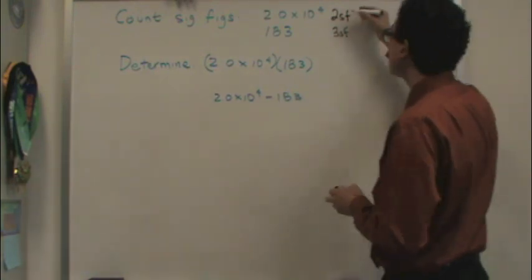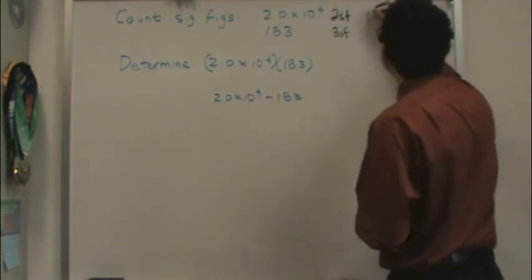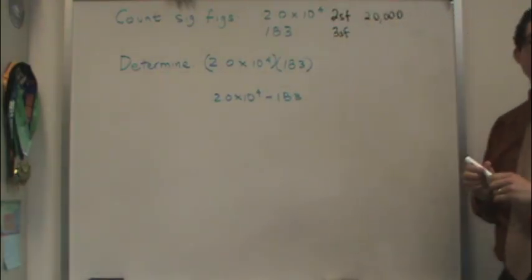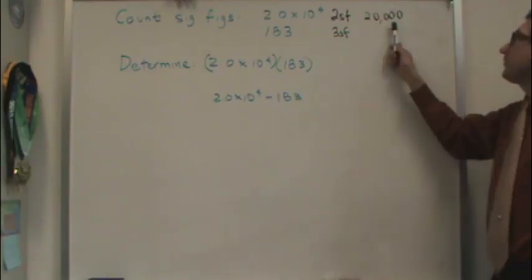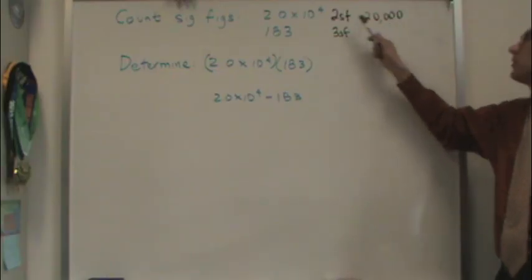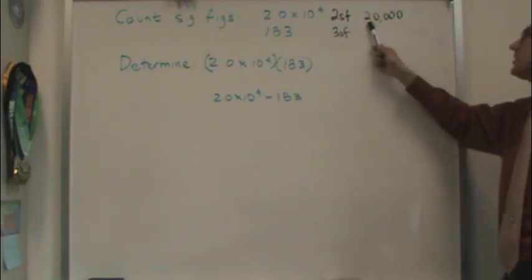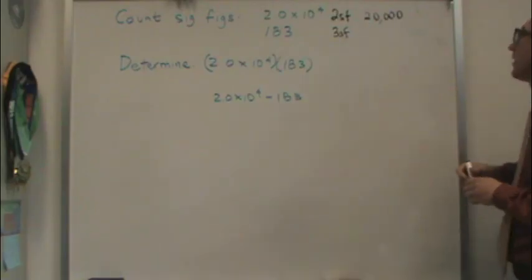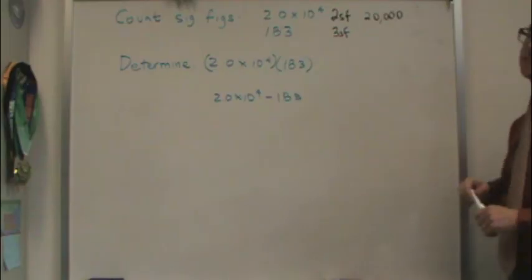However, let's take a look at that first number again. If I write it out, it's the number 20,000. If you just saw this number without that information, you'd say this only has one sig fig because of the two. It does not have five sig figs.